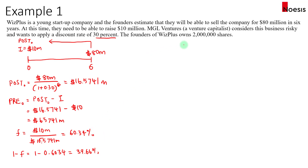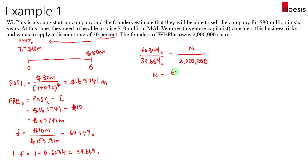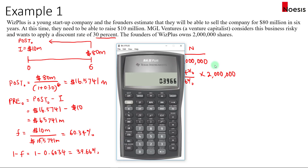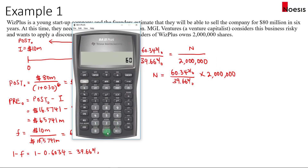On a proportionate basis, the founders currently own 39.66% of the company, which is 2 million shares in total. For the VC, they are holding 60.34% of the company. So the number of shares for the VC equals 60.34% divided by 39.66%, times 2 million — so that's about 3,042,864 shares.